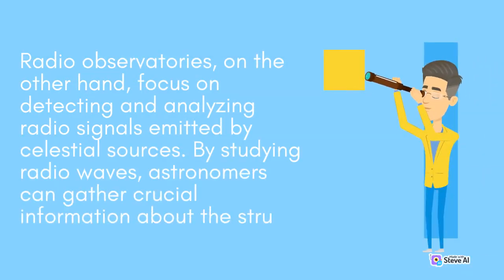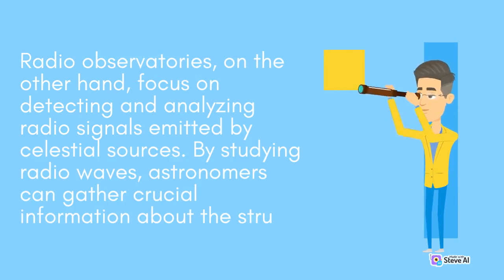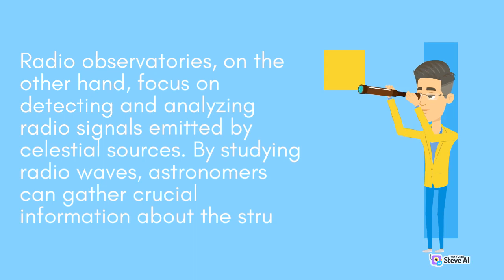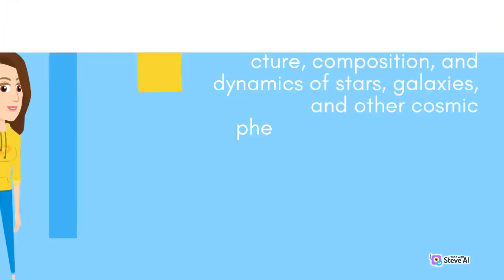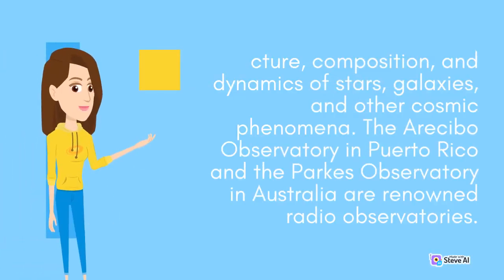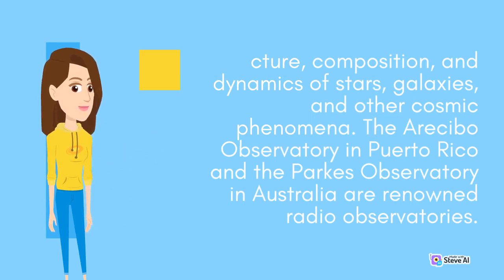Radio observatories, on the other hand, focus on detecting and analyzing radio signals emitted by celestial sources. By studying radio waves, astronomers can gather crucial information about the structure, composition, and dynamics of stars, galaxies, and other cosmic phenomena. The Arecibo Observatory in Puerto Rico and the Parkes Observatory in Australia are renowned radio observatories.